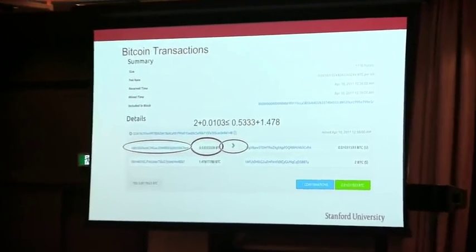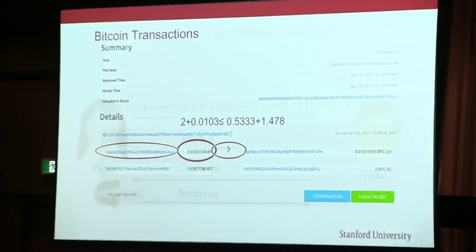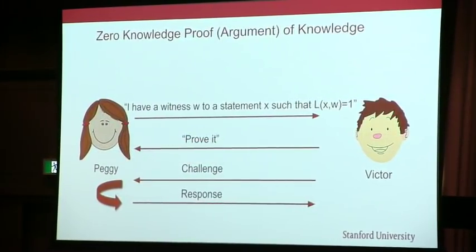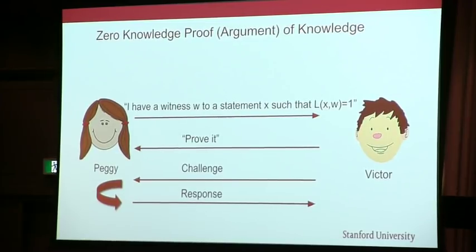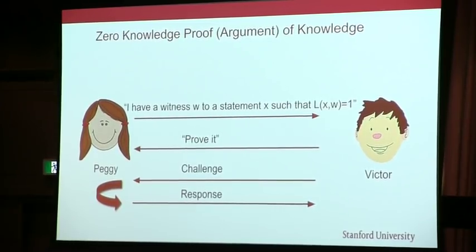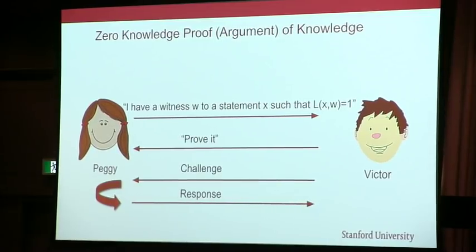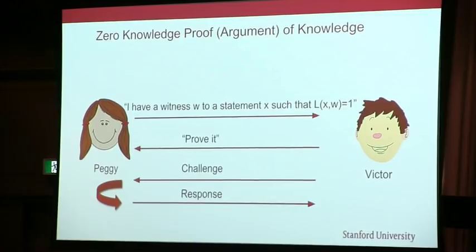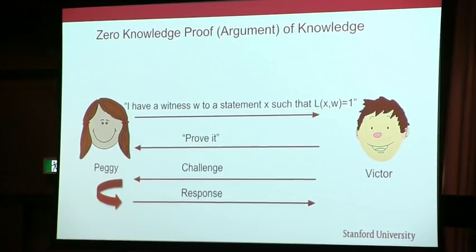There's been a lot of work in trying to improve this, and all of them rely on this tool: zero-knowledge proofs of knowledge or zero-knowledge arguments of knowledge. What a zero-knowledge argument of knowledge lets you do is say that you have a witness to a statement such that the statement is true.